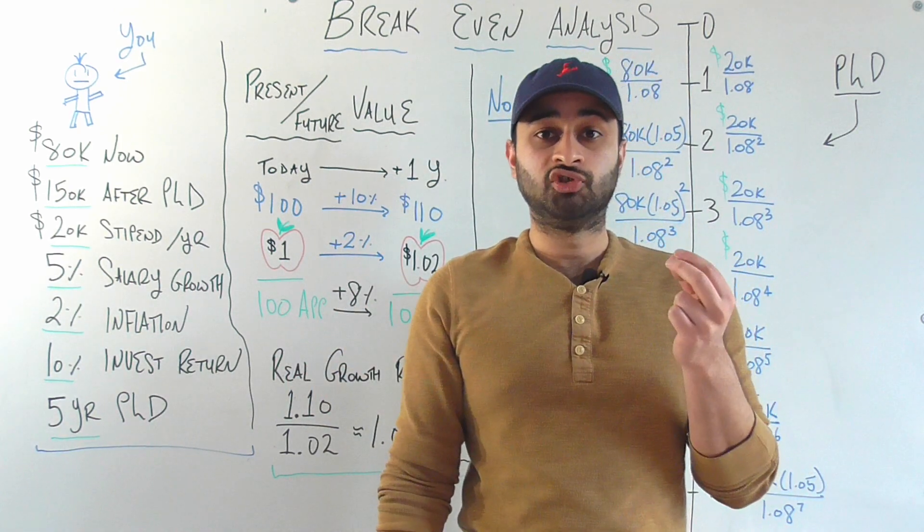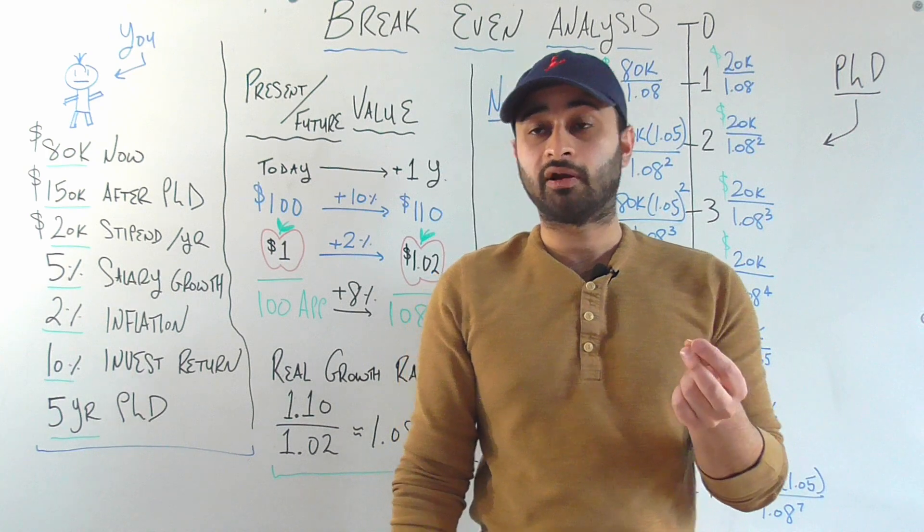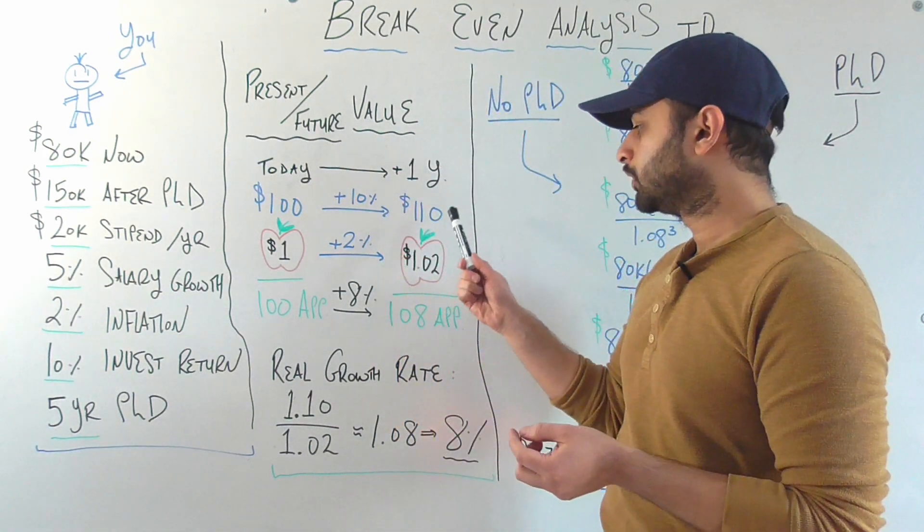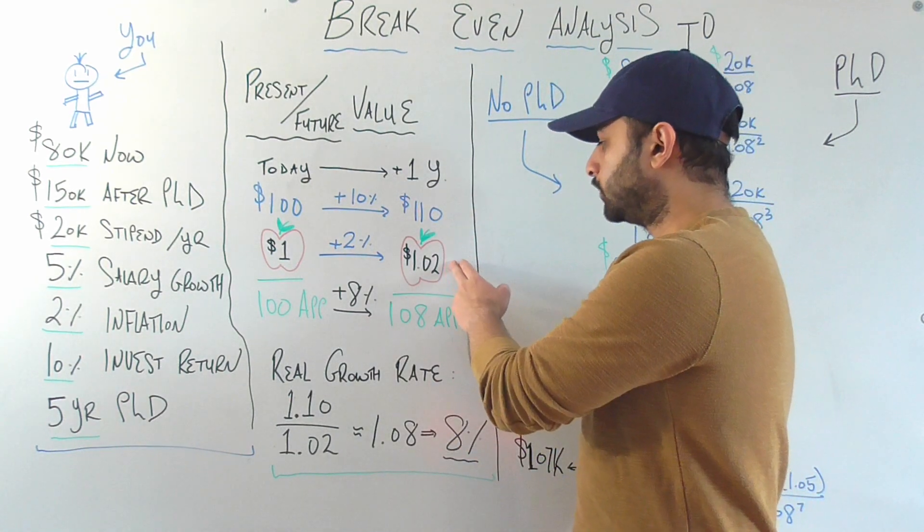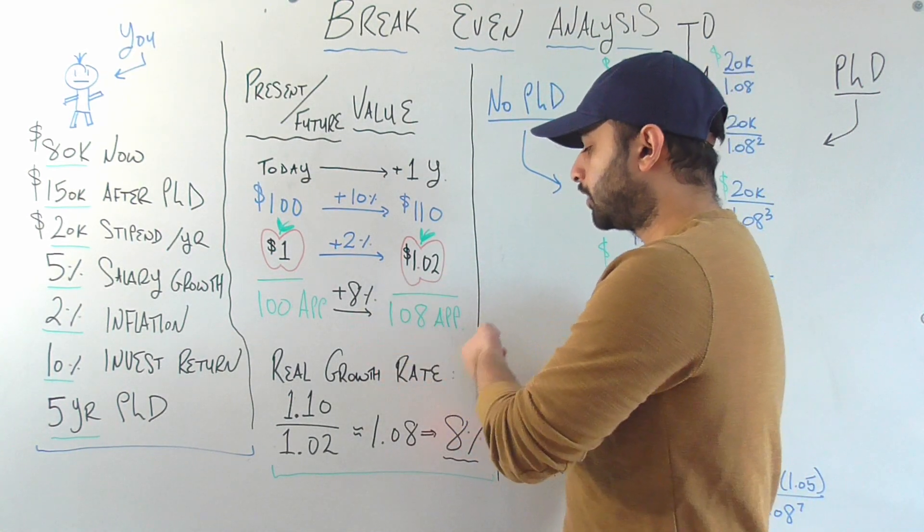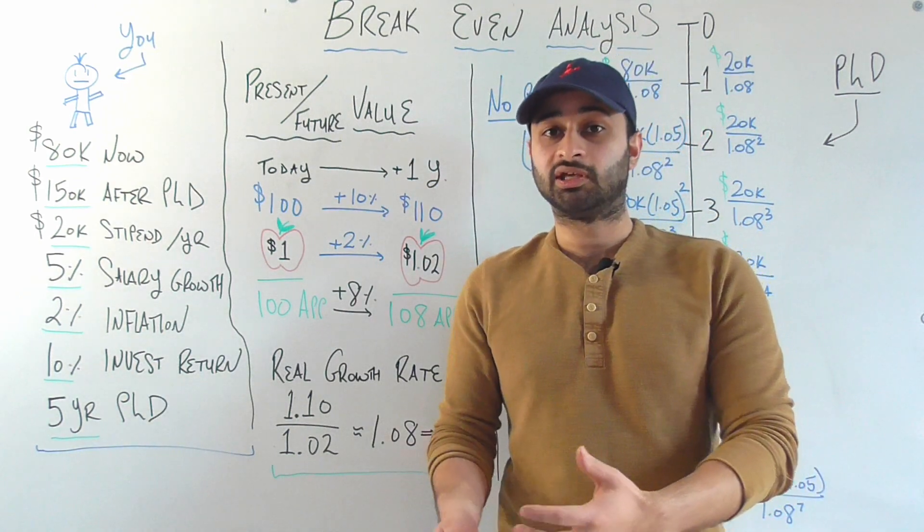And the other question is how many apples could you buy a year from now? So a year from now, that $100 has become $110, but apples have also gotten more expensive. And so if we divide $110 by $1.02, we find that we can buy about 108 apples in a year.